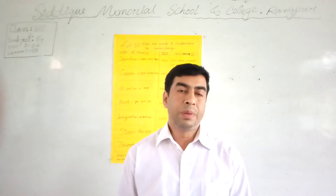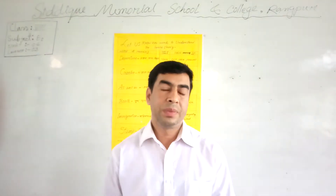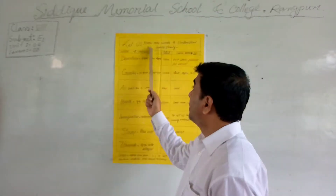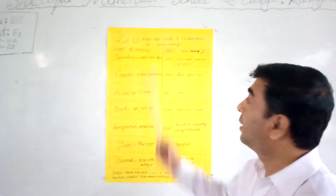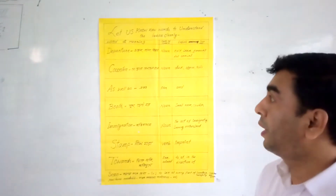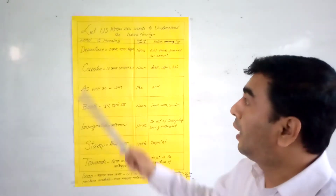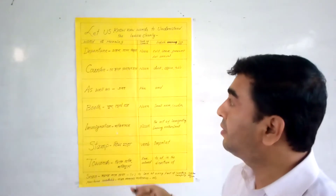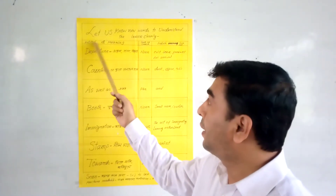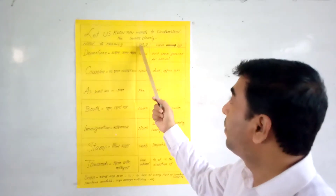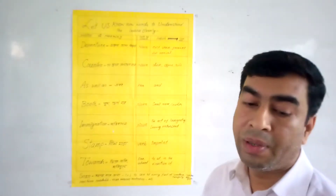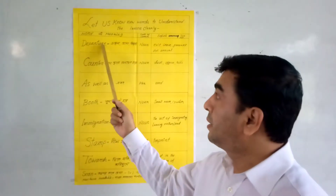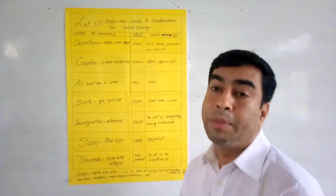Before starting our text, let us learn some new words to understand the lesson clearly. I have written some words with their meaning and parts of speech. First word: departure. What is the meaning of departure? Departure means leaving — it is a noun.